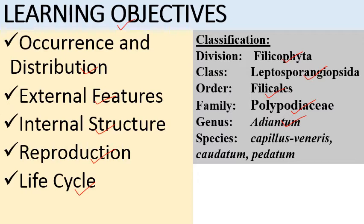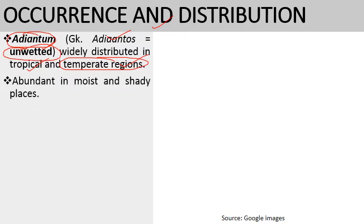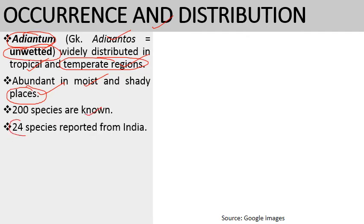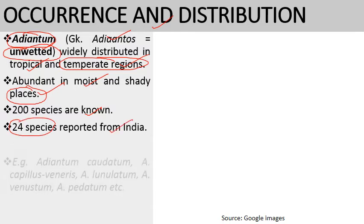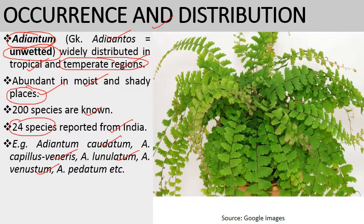Some species are Adiantum capillus-veneris, Adiantum caudatum, and Adiantum pedatum. The word Adiantum is derived from the Greek word 'adiantos' which means 'unwetted.' It is widely distributed in tropical and temperate regions and is most abundantly found in moist and shady places. There are approximately 200 species known, of which 24 species are reported from India, including Adiantum caudatum, Adiantum capillus-veneris, Adiantum lunulatum, Adiantum venustum, and Adiantum pedatum.